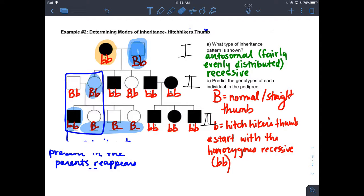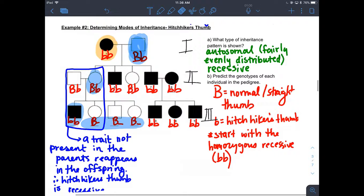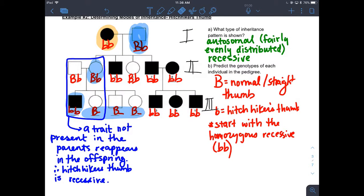And I believe I say that in this note here. Yeah, trait not present in the parent's offspring. Yep, comes up later. So therefore we know it's recessive and that just brings us back to part A of the question.